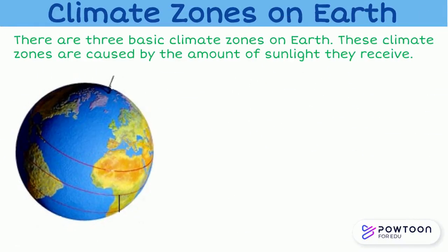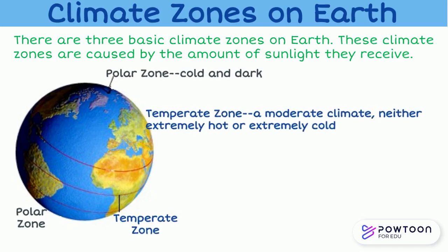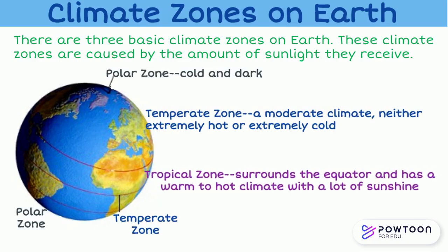There are three basic climate zones on Earth. These climate zones are caused by the amount of sunlight they receive. The three zones are the polar zones, the temperate zones, and the tropical zone.